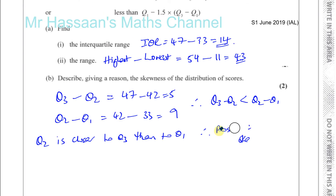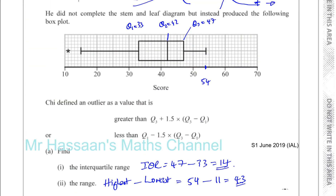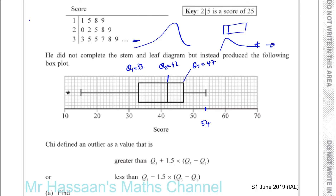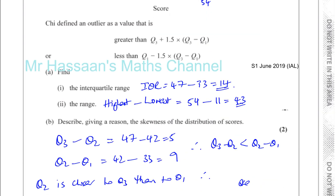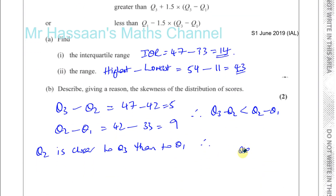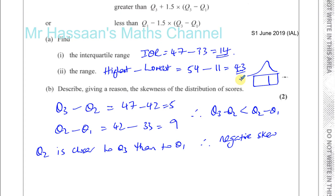Actually, let me correct that — I was thinking of a different case. In our situation, the median is closer to the upper quartile than to the lower quartile. If you draw the shape, the tail points towards the left, which means it has a negative skew. So the answer is negative skew.